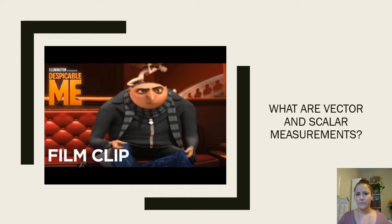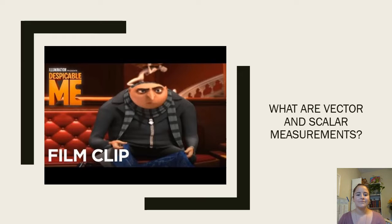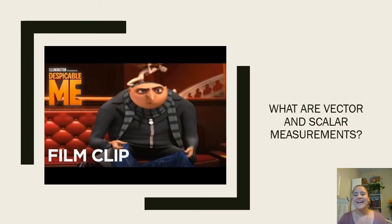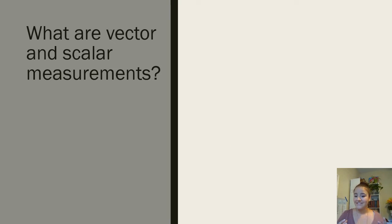That brings us to another concept we talk a lot about in physics: vectors and scalars. Rather than me tell you, let's listen to it from an expert. From the movie: 'I'm applying for a new villain loan — go by the name of Vector. That's a mathematical term, a quantity represented by an arrow with both direction and magnitude. Vector! Because I'm committing crimes with both direction and magnitude.'